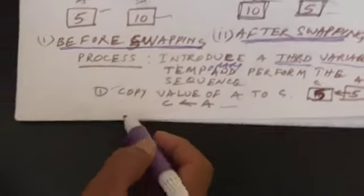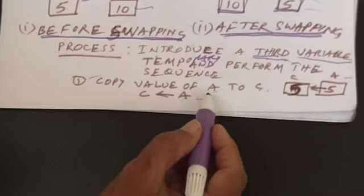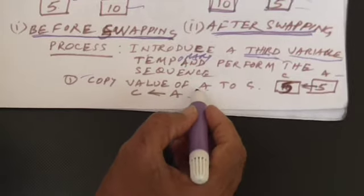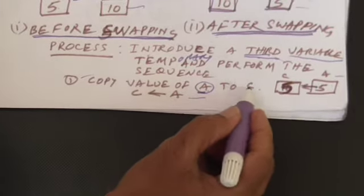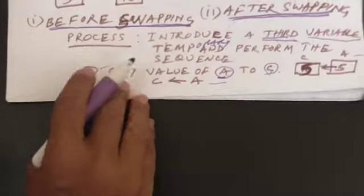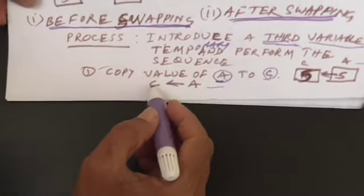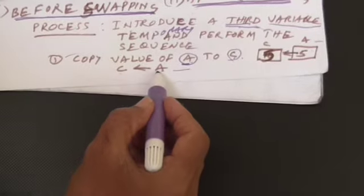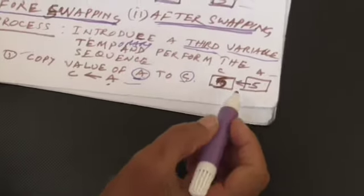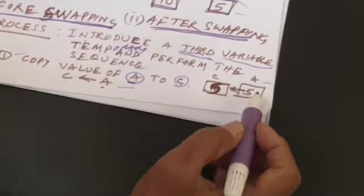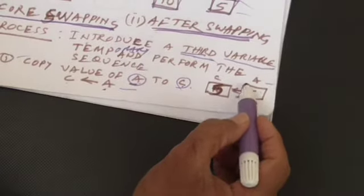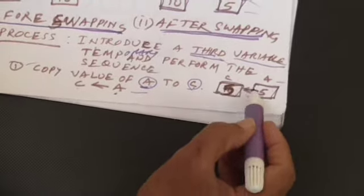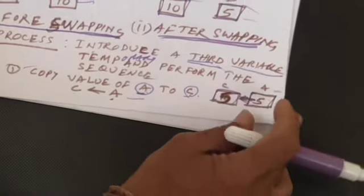First, you copy the value of variable A to C. In algorithmic fashion, we write that C is assigned the value of A. When you see the pictorial representation, the value present in A is 5, and after this first step, C also holds 5.